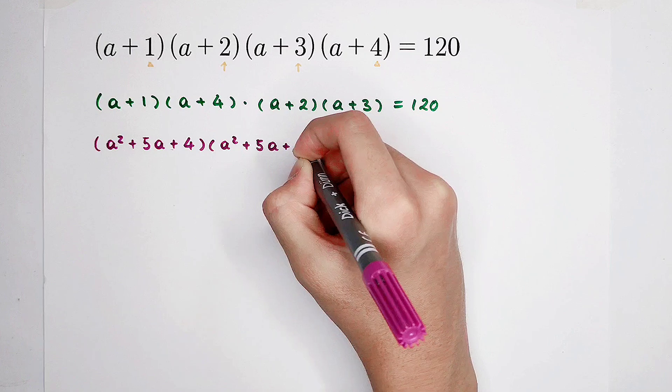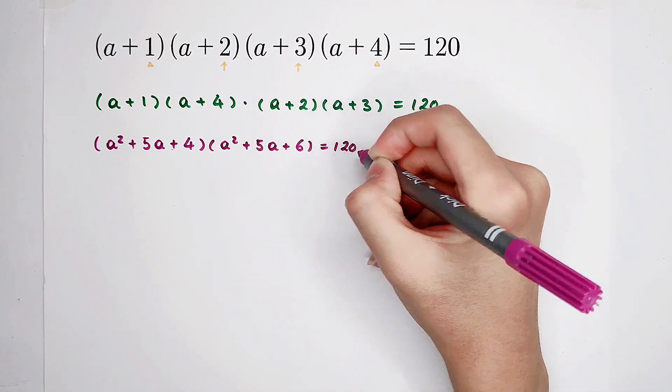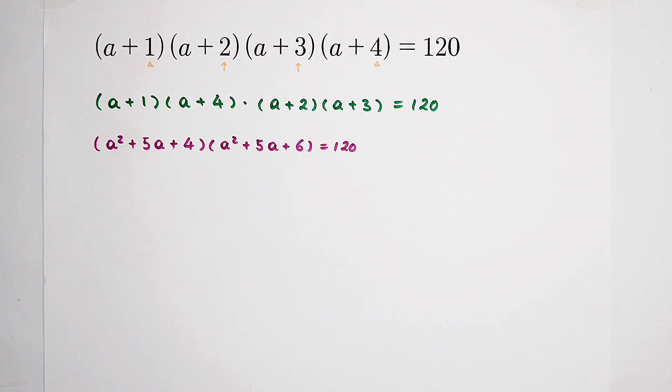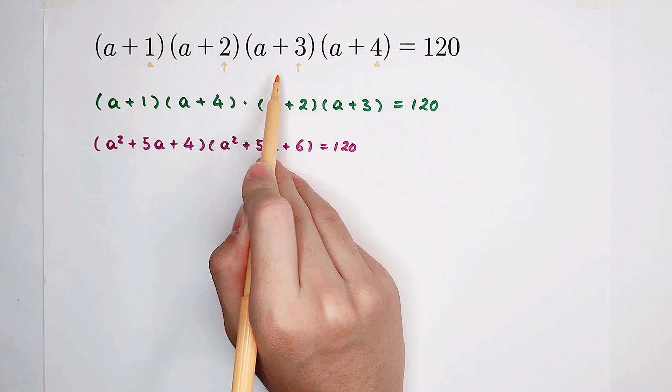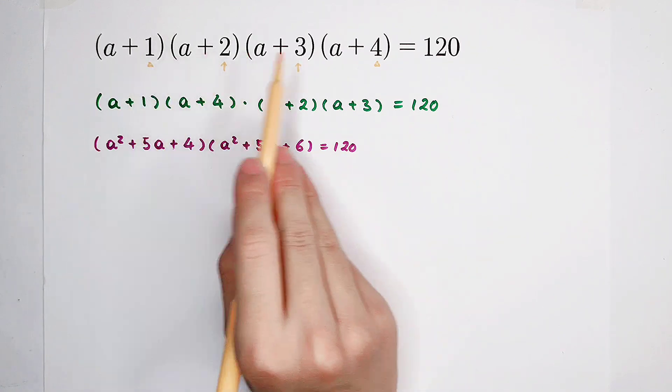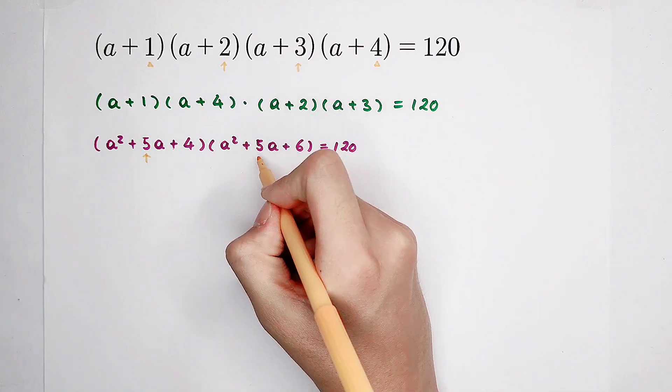So now, you know why I've let these two be together and then these two. Because 1 plus 4, here 5. 2 plus 3, here 5.